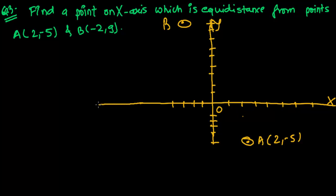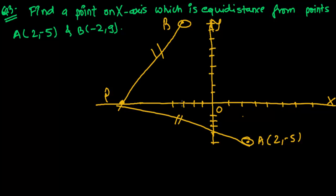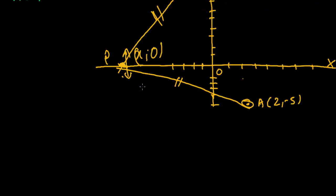Now we have to find a point on the x-axis which is equidistant from point A and point B. Let's suppose that point is P. Since P lies on the x-axis, it doesn't move up or down, so its coordinates will be (x, 0).